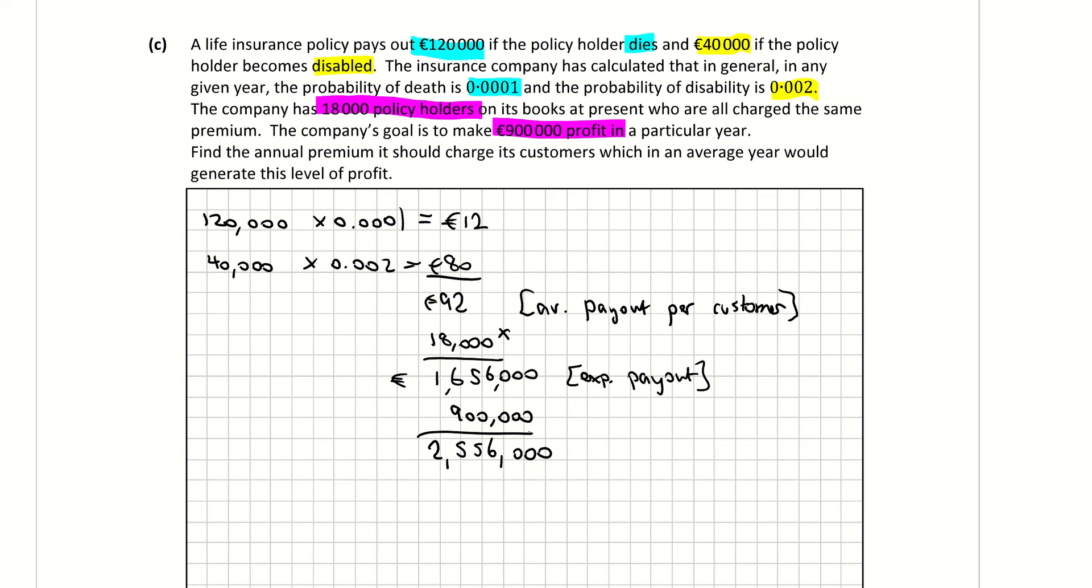Now we want to find out, find the annual premium per customer. So in order to get per customer, we need to divide the total pot of money by how many customers they have. Well, they have 18,000 customers. And when I divide that by 18,000, I get €142. So the average premium that this company should charge is €142. And that is question 10.